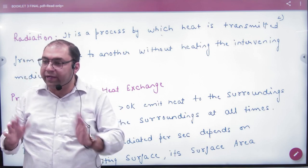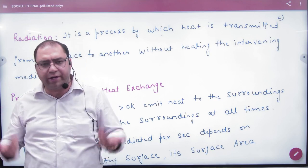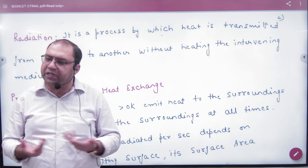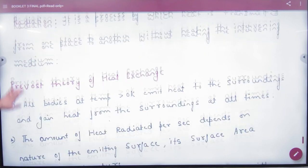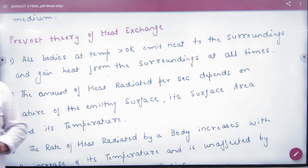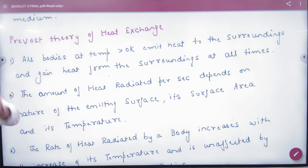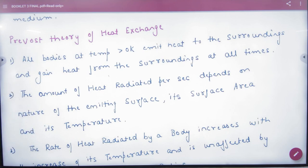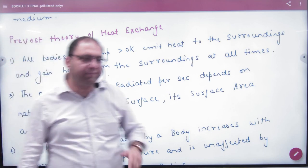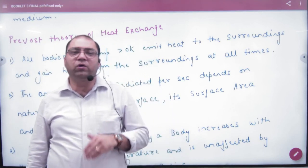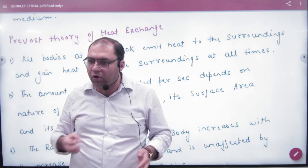Because there are electromagnetic radiations, they are automatically generated. Any body is the source of radiations. This is explained by a theory which we call the Prevost Theory of Heat Exchange. Prevost, a scientist, told us that any body — whether a bench, a projector, a person, or any object — continuously, as long as the body is above zero Kelvin, is continuously absorbing heat and releasing heat.